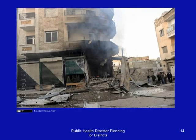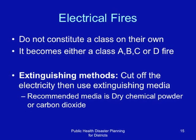Electrical fires do not constitute a class of their own, but may be either A, B, C, or D types of fires. Extinguishing involves cutting off electricity if possible. The recommended media is dry chemical powder or carbon dioxide.